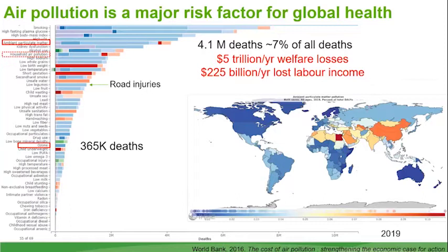To put that in context, tobacco smoking is about 15% of all deaths and dietary factors are about 14%. So air pollution is really right up there with things everybody would appreciate as being important for health. This also has high costs: estimated welfare costs due to health impacts were $5 trillion per year, with an additional $225 billion per year in lost labor income — a really massive impact.